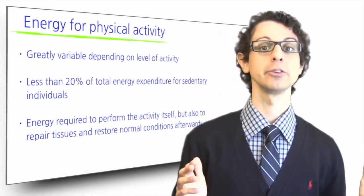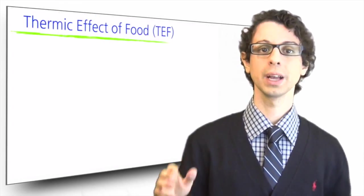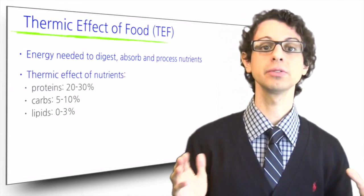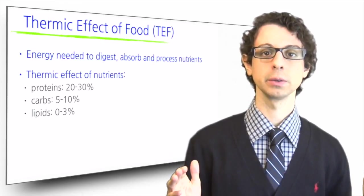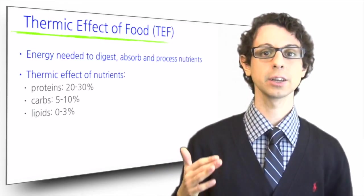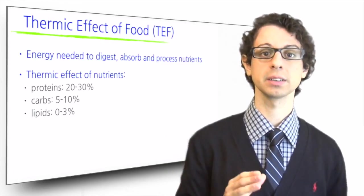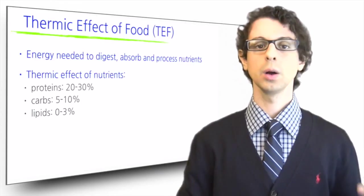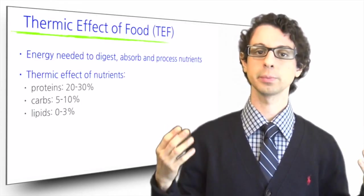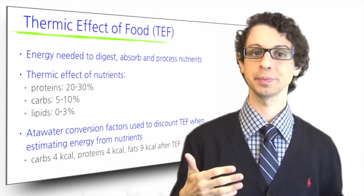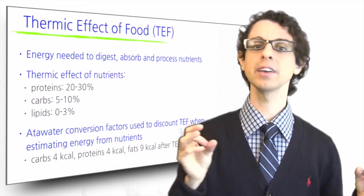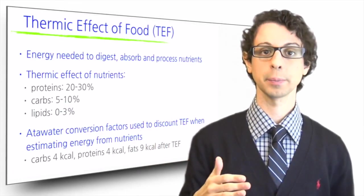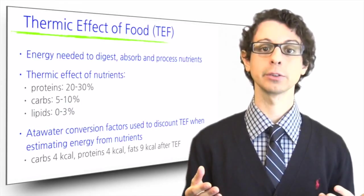Let's now move on to the last component of energy expenditure, which is called the thermic effect of food. This is the energy we need to spend to digest, absorb, and process nutrients from food. The three macronutrients contribute differently to the thermic effect. Lipids require the least energy to be used, while proteins require the most. About 20 to 30% of the energy contained in proteins needs to be used just to make these proteins available. The thermic effect of carbs is 5 to 10% of their energy content, while that of fats is between 0 and 3%. When we say that proteins provide 4 calories per gram, we have already discounted the thermic effect of food. If we burn one gram of protein it will actually release 5.65 calories, but we estimate that the 1.65 on top is what needs to be spent on average just to process them. The same goes for the 9 calories per gram of lipids and the 4 calories per gram of carbs.